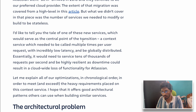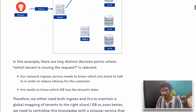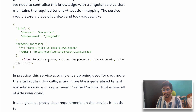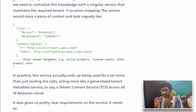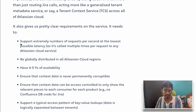The Tenant Context Service needed to be called multiple times per user request, with incredibly low latency, and be globally distributed — essentially needing to service tens of thousands of requests per second. The TCS deals with tenant metadata like how many active products you have, your license details, and all tenant-related information.